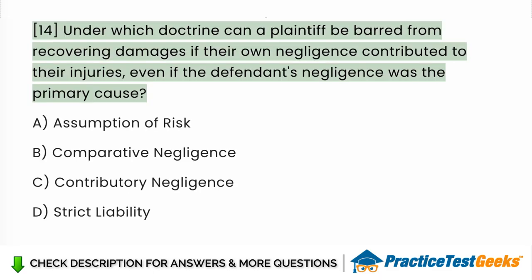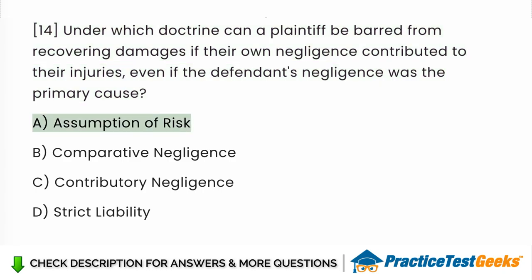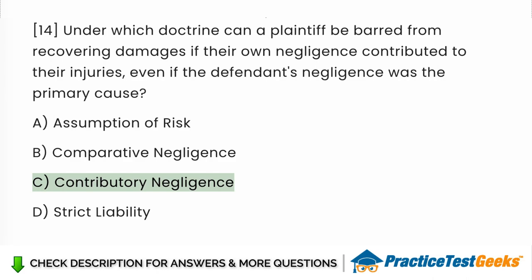Under which doctrine can a plaintiff be barred from recovering damages if their own negligence contributed to their injuries, even if the defendant's negligence was the primary cause? a. Assumption of risk. b. Comparative negligence. c. Contributory negligence. d. Strict liability.